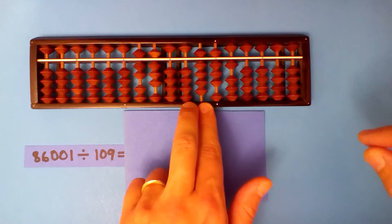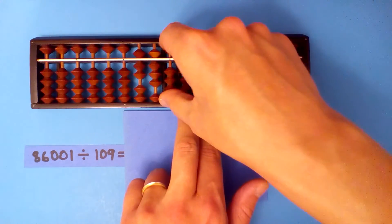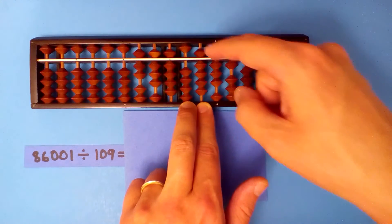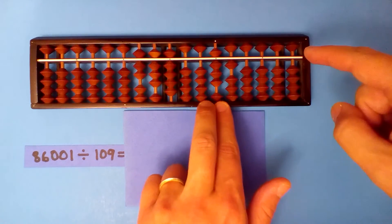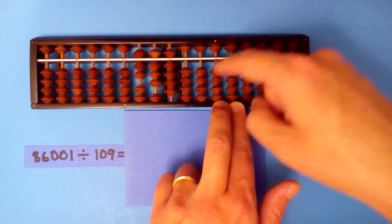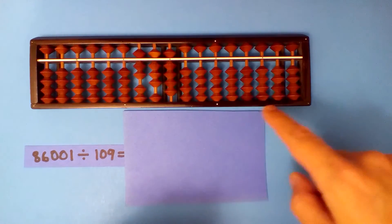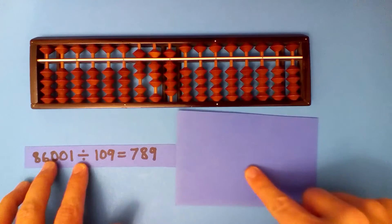And one into nine nine times. Nine times one is nine, nine times zero zero, nine times nine eighty-one. Seven hundred, and we're finished, our quotient 789.